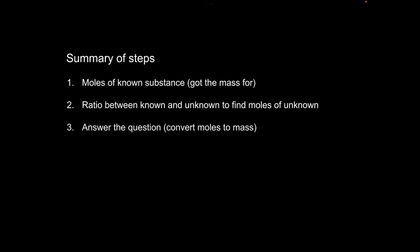OK, so hopefully that all made sense and you feel like you're able to do those calculations now. So here's a summary of the steps. So step one, calculate the moles of the known substance. So that's obviously the one that you've got the mass for. Step two, you're going to apply the ratio between the known chemical and the unknown one to find the moles of the unknown chemicals, obviously the one you're asked about in the question. And then finally, you answer the question, and all of the ones we've done today, the question was converting the moles to masses. And obviously be careful about your final units because they don't always ask for the final answer to be in grams.